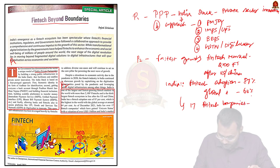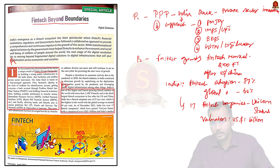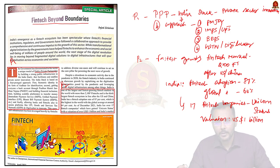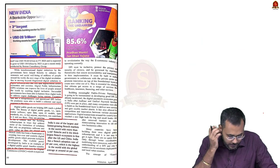In India, around 17 fintech companies hold unicorn status. Unicorn is a term used in capital markets — if any company has a valuation of US $1 billion, it comes under unicorn status. For example, Elon Musk purchased Twitter for around $40 billion. In India right now, 17 fintechs have a valuation of around $1 billion, giving them unicorn status.